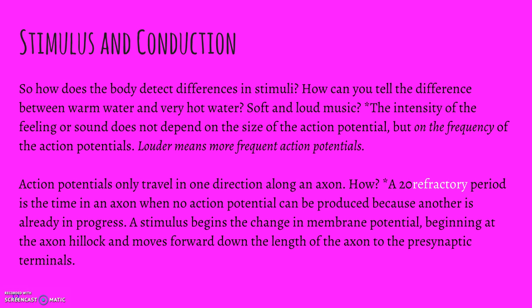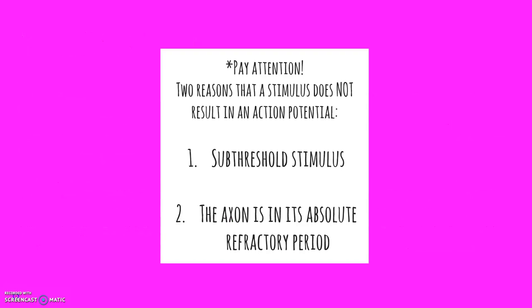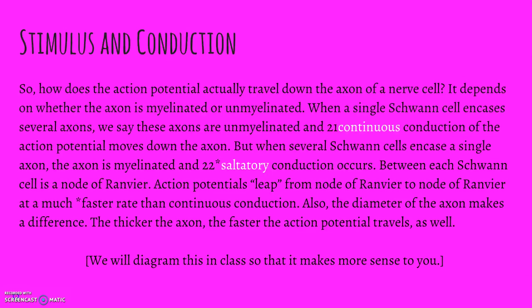Action potentials only travel in one direction along an axon. A refractory period is the time in an axon when no action potentials can be produced because another is already in progress. A stimulus begins the change in the membrane potential at the axon hillock and moves forward down the length of the axon to the presynaptic terminals. There are two reasons a stimulus does not result in an action potential: one, it's a sub-threshold stimulus—too weak to make a response; two, the axon is already in use and is in its absolute refractory period, so another stimulus can't happen.